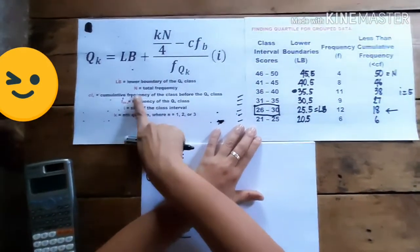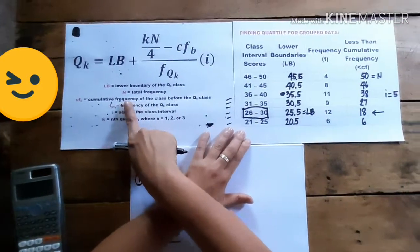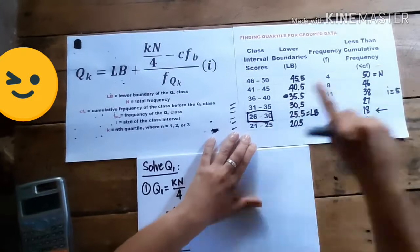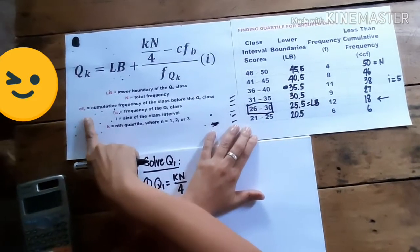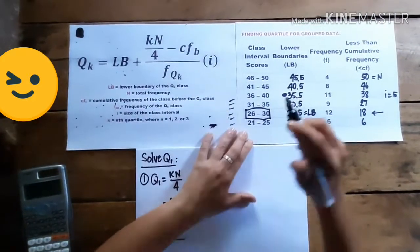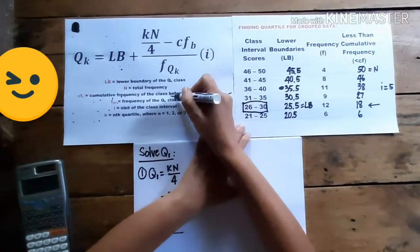Next, we need to get n, our total frequency n, we already got that. And the CFB or the cumulative frequency of the class before, before the quartile 1 class.